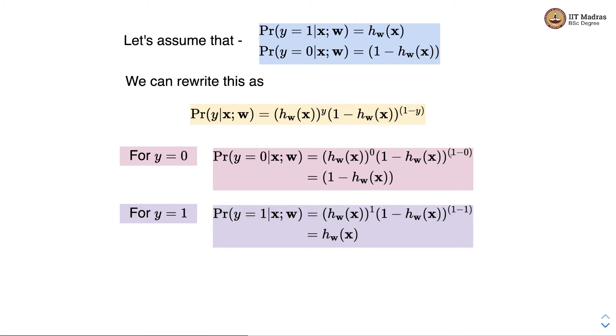For y equal to 1 we substitute 1 in place of y and we get hw of x. So now you can see that for y equal to 1, probability of y equal to 1 given x is hw of x, and probability of y equal to 0 given x is 1 minus hw of x.